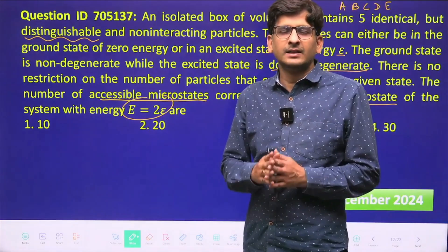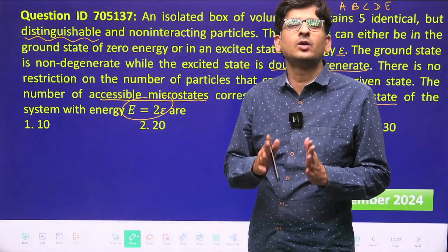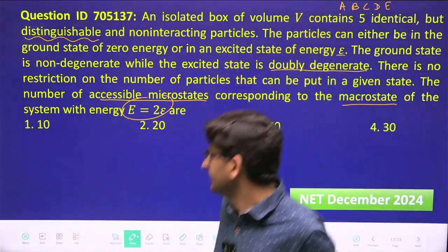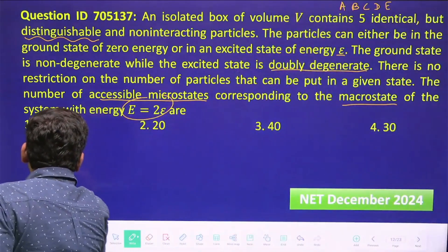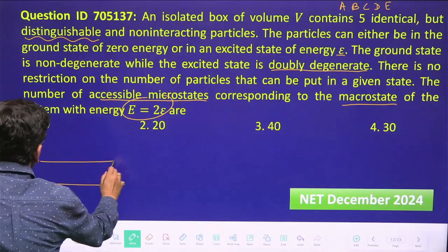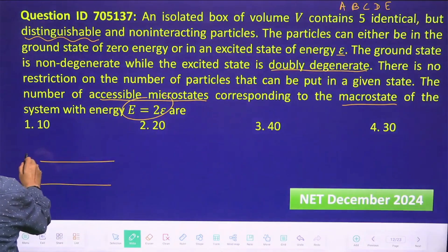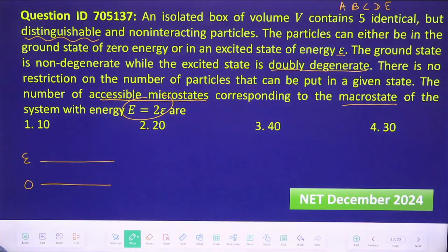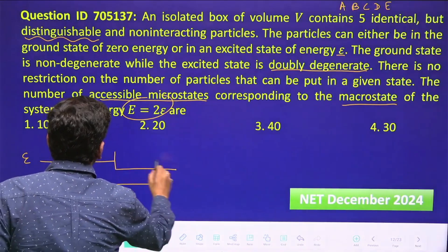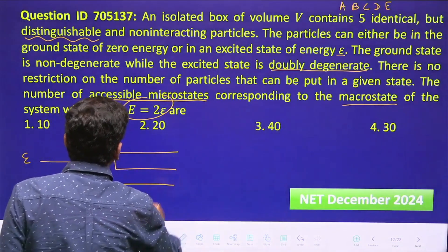Let us understand this. We have a ground state with zero energy, and this excited state—you can call this energy e—and this is non-degenerate and this one is doubly degenerate. The system is like this.